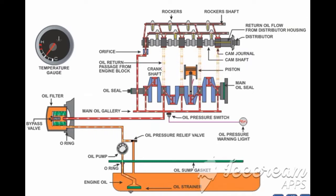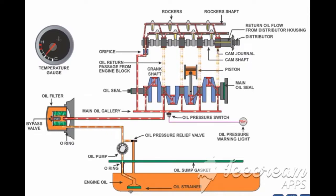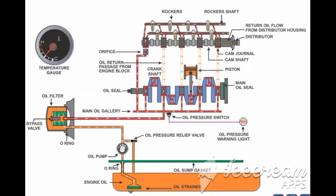After filtration, the clean oil flows into the main oil gallery in the cylinder block. The main oil gallery supplies oil to the crankshaft journals and the cylinder head.